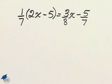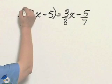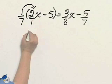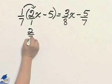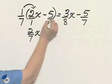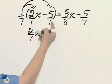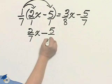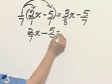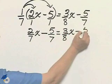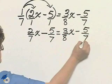Both parentheses and fractions, clear parentheses first. Distribute 1 seventh times 2x, 2 sevenths x. 1 seventh times 5 over 1, 5 sevenths, equals 3 eighths x minus 5 sevenths.